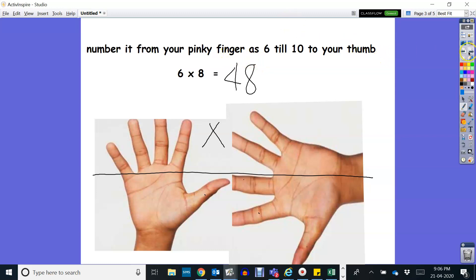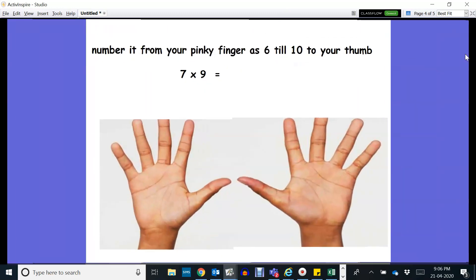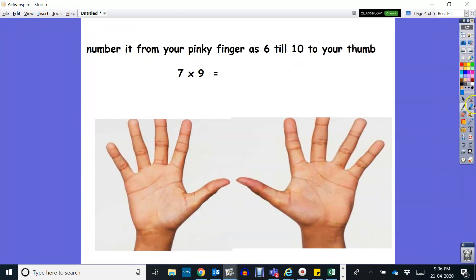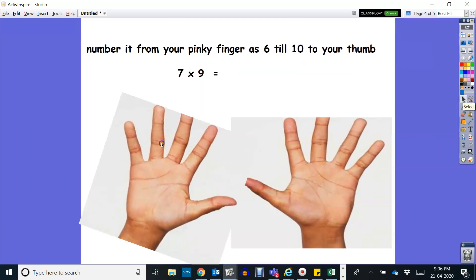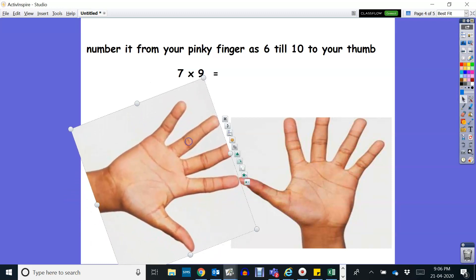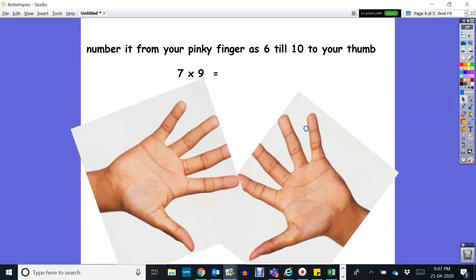Let's have another example. 7 times 9. So your second finger is your 7 and let's meet it with your fourth finger as 9.